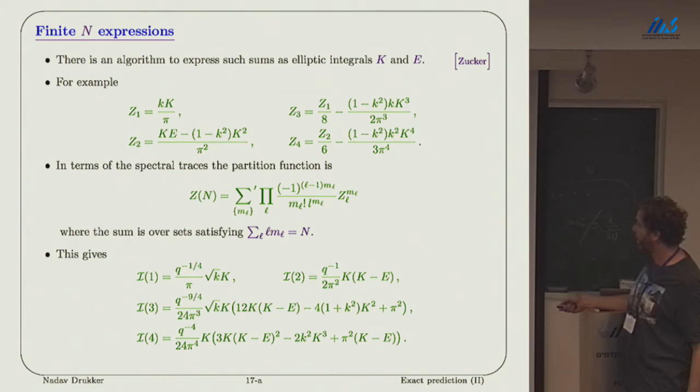You get the result for I1, I2, I3, I4. Here I reintroduced this annoying prefactor that was before compared to Z of N. This is the answer at finite N up to N equals 4, but Mathematica will quickly generate it for you to arbitrary finite N. It's always a polynomial in K and E and little k. This plays the role of the Laguerre polynomials which we had at finite N for the circular Wilson loop.